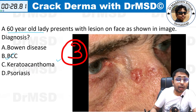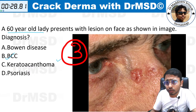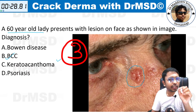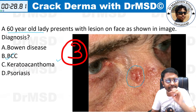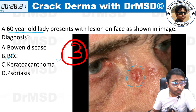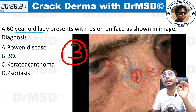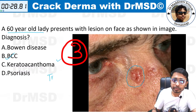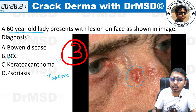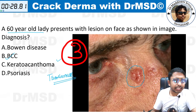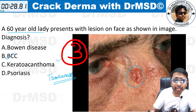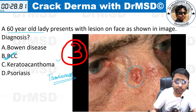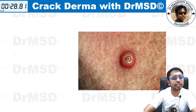This is a very classic picture — an elderly woman, 60-year-old lady, with this lesion. If you observe carefully, the lesion appears very translucent with a pearly white nature, and you are able to see dilated blood vessels called telangiectasias. Whenever you get to see this kind of picture, you should think about basal cell carcinoma — that is the diagnosis here.